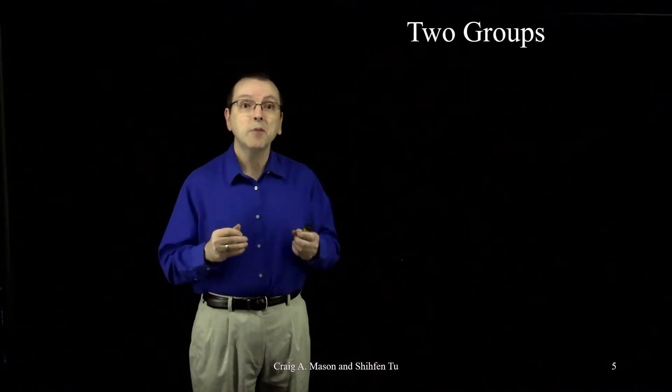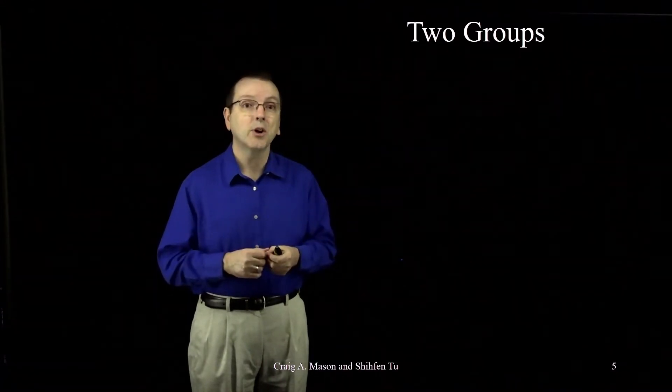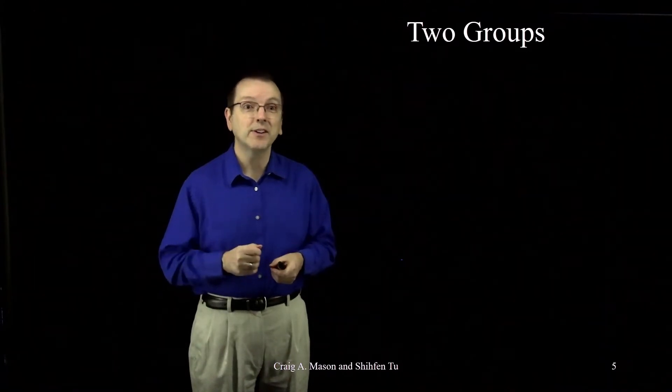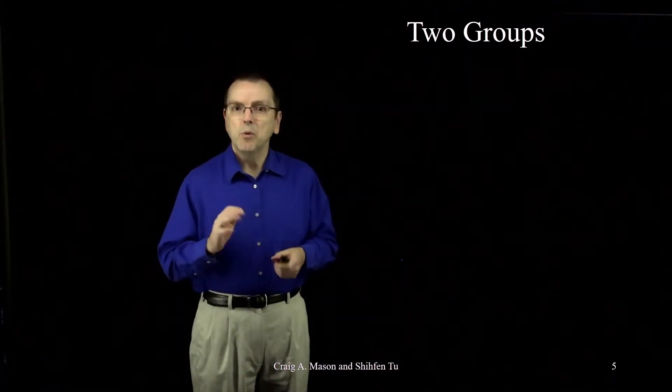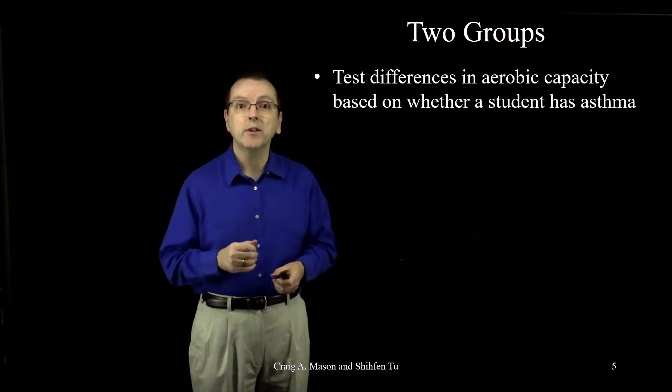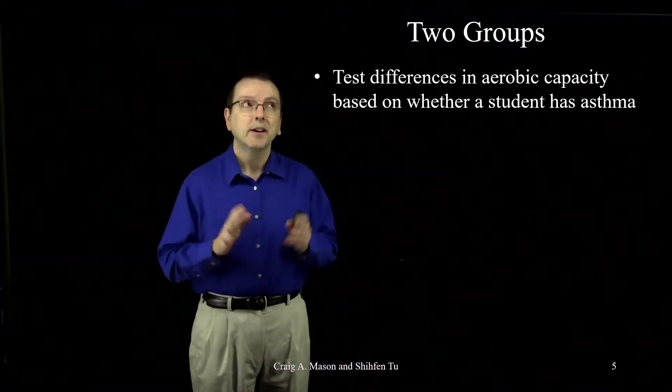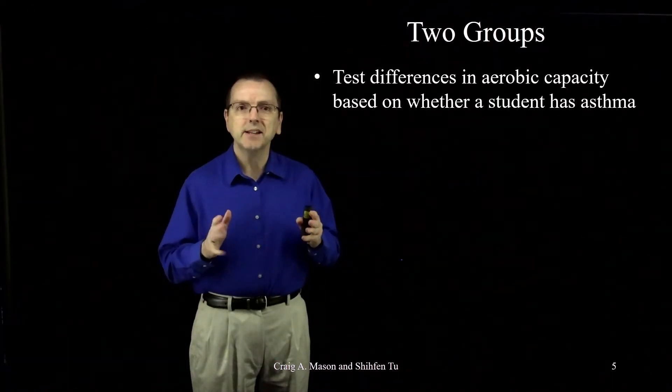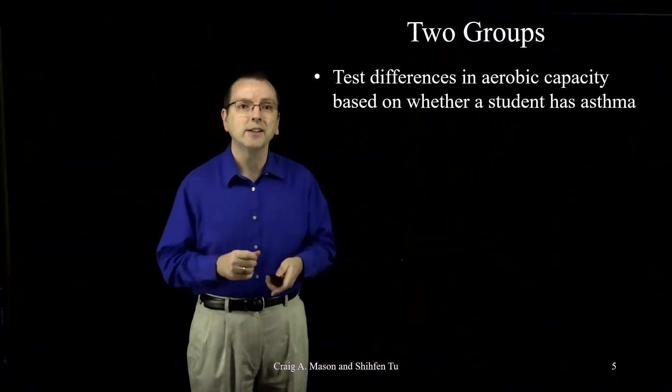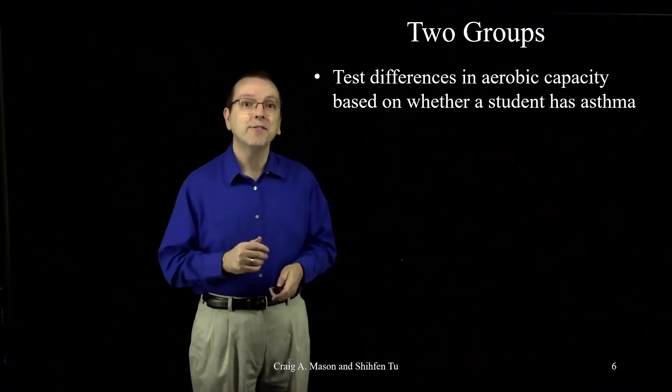For this example, let's use some real data from a project that I did a few years ago with a now retired colleague, Steve Butterfield and his team. We were looking at differences in aerobic capacity based on whether a student did or did not have asthma. Aerobic capacity is how much oxygen the body can use in intense exercise. It's a good thing related to health and fitness.